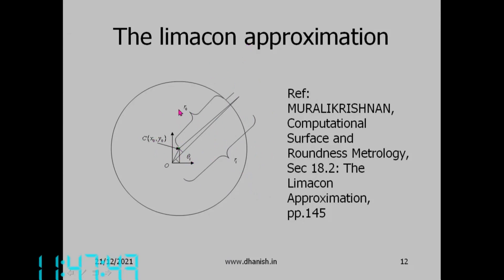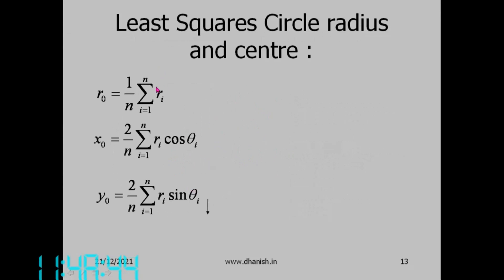Assuming the center of the actual circle is very close to the center of the table, we can use the limacon approximation. The total distance is r_i, and we want to find the deviation at each point. The approximate relation is: r_i ≈ x₀·cosθ_i + y₀·sinθ_i + r₀ + e_i. The derivation for how to get radius r₀ and center (x₀, y₀) is in the reference textbook.